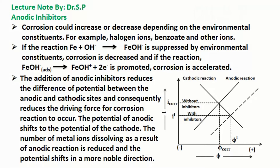For example, halogen ions, benzoate, and other ions can affect corrosion. If the reaction between iron and hydroxide is suppressed by environmental constituents, corrosion is decreased; and if the reaction is promoted, corrosion is accelerated.